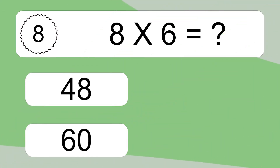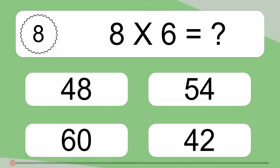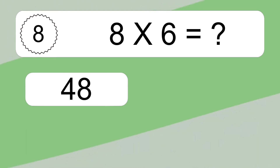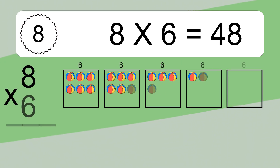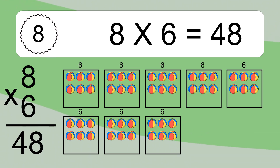8 times 6 equals what? 8 times 6 equals 48. We have 8 boxes, and each box has 6 colorful balls inside. If you count all the balls in all the boxes together, you will have 8 times 6 balls.